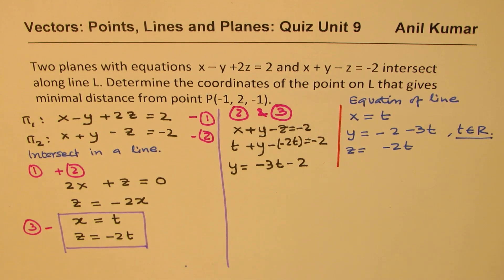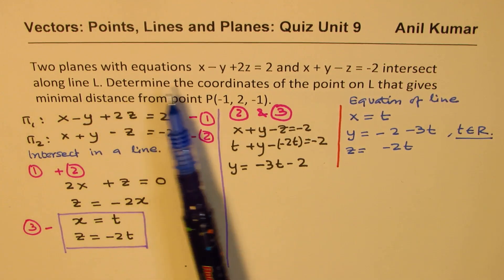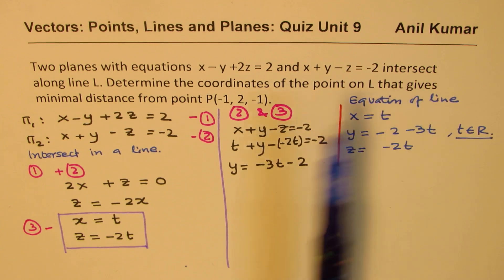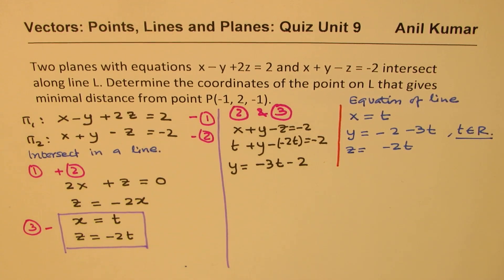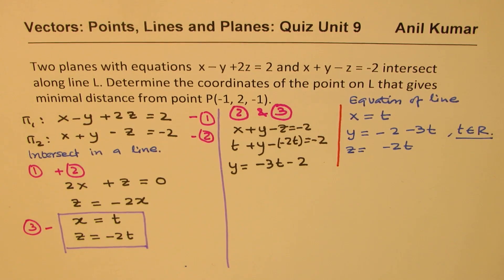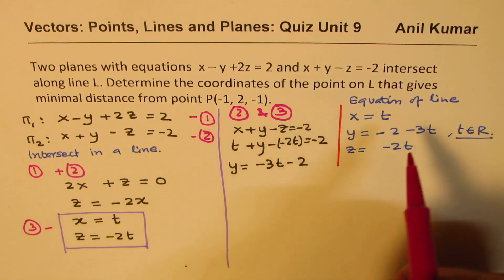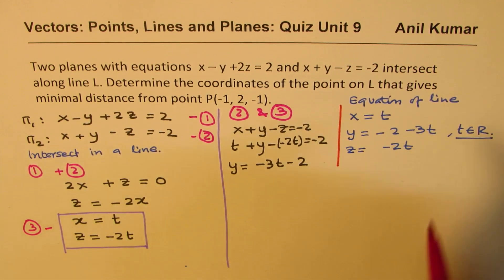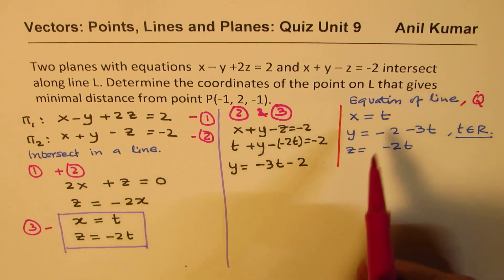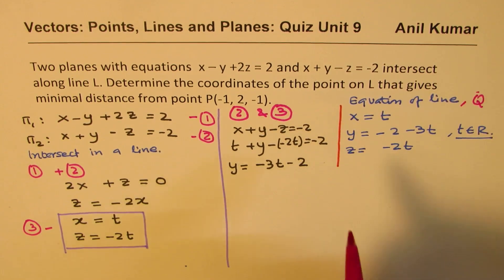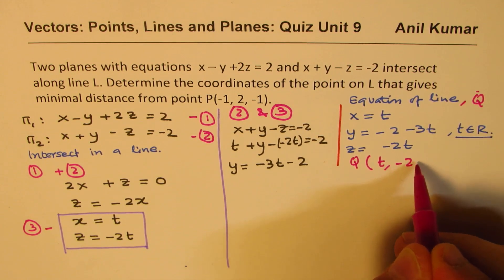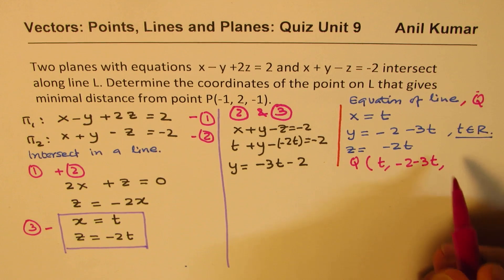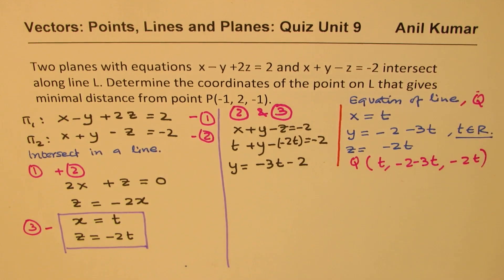Second part: determine the coordinates of the point on L that gives minimal distance from point P. That means we could take this as a general point Q. Point Q will have these values: t, minus 2 minus 3t, and minus 2t.